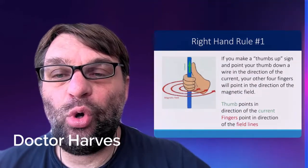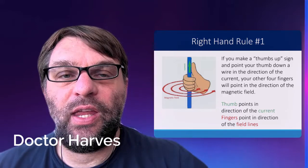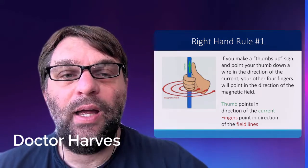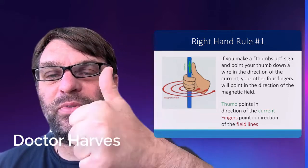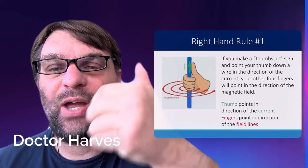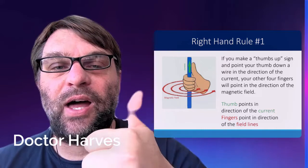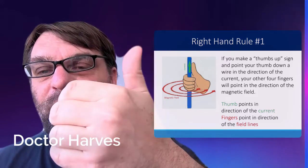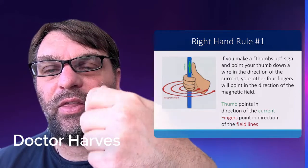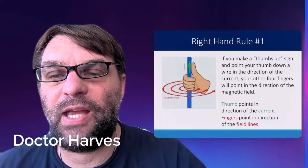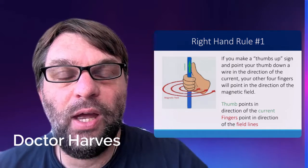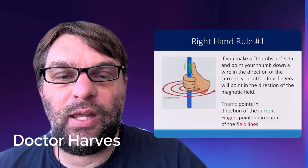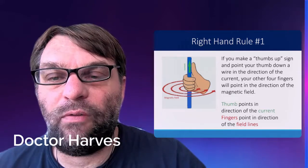The first right-hand rule we have is the right-hand rule involving the direction of a magnetic field on a wire. If you make a thumbs-up sign with your right hand, then the thumb always points in the direction of the current, and your fingers will point in the direction of the magnetic field. In this case, it's anti-clockwise. The thumb points in the direction of the current in that wire, and the finger points in the direction of the field lines.